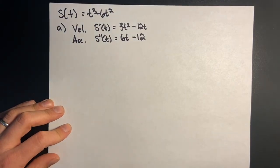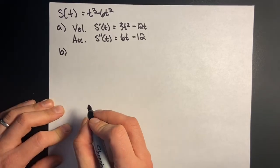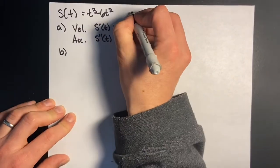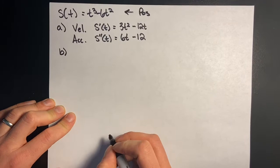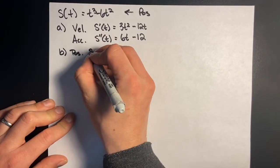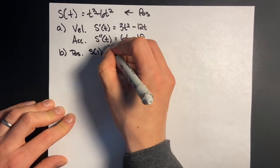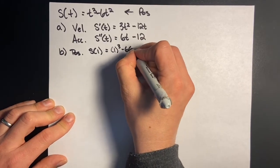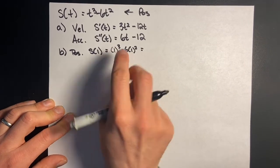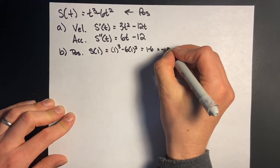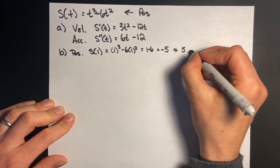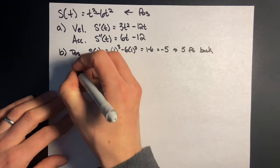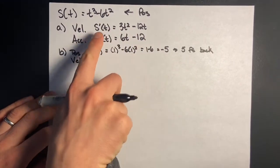Part b asks me to find position, velocity, speed, and acceleration at t=1. The position formula gives us s(1): that equals 1 cubed minus 6 times 1 squared, which is 1 minus 6, giving negative 5. So the particle is essentially 5 feet back from the starting point. That's my position.